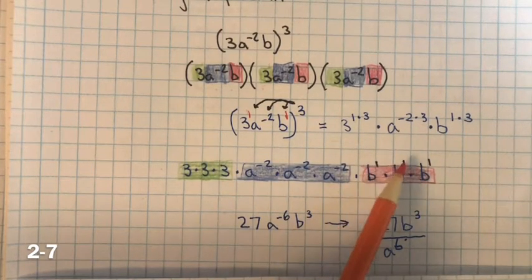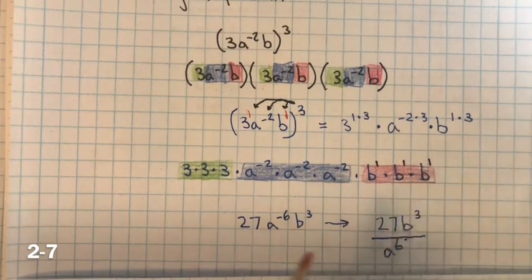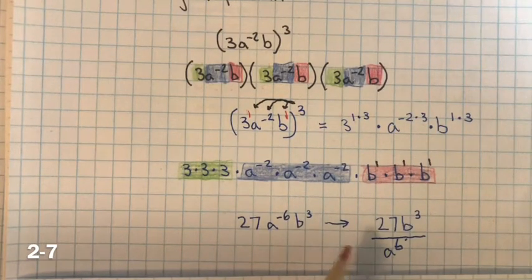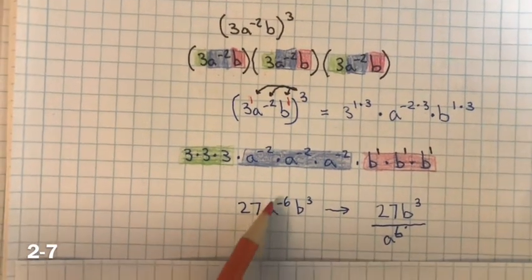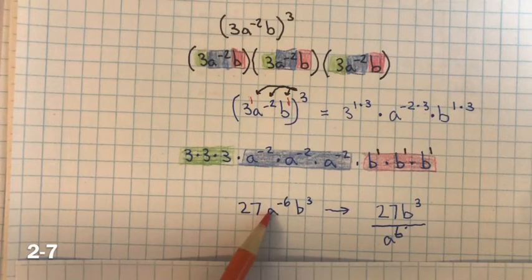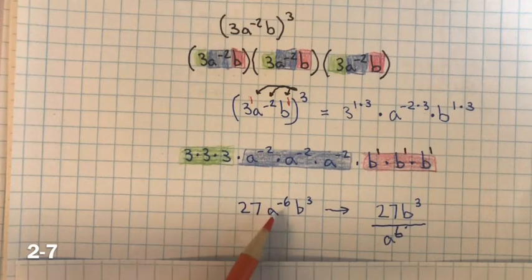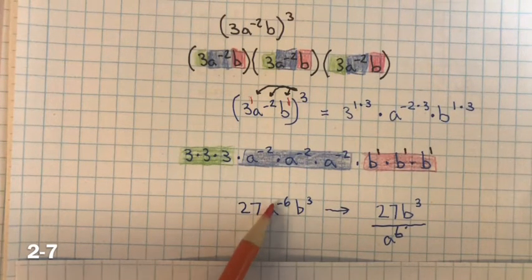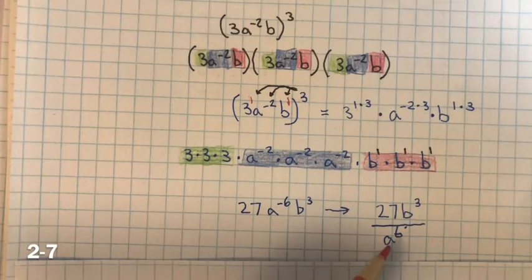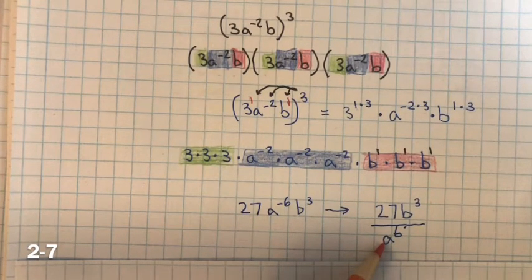1 plus 1 plus 1 is 3 for the B exponent. Now, you can't have a negative exponent — you need to simplify that. If you have a negative exponent in the numerator, you bring it down to the denominator, so it becomes a to the sixth power in the denominator.